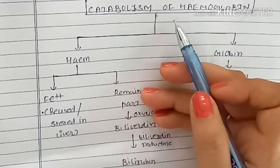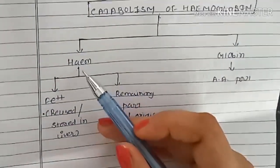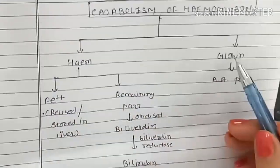Catabolism of hemoglobin. Fate of hemoglobin causes release of heme and globin.